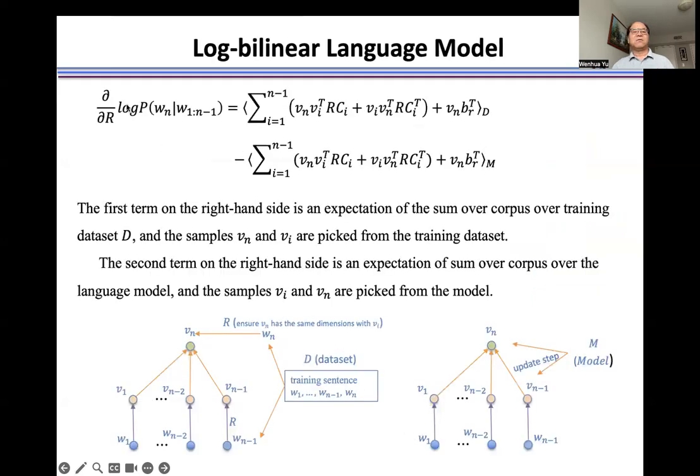The gradient of loss function with respect to R is equal to the difference of two terms. The first term is the expectation of this summation over the training dataset. And the second term is the expectation of this sum over the language model.